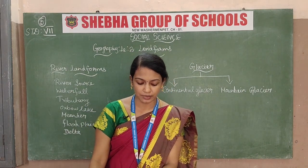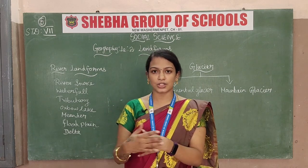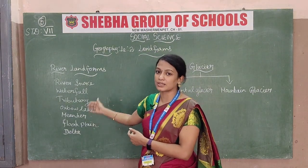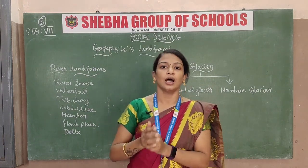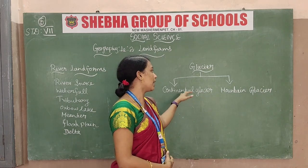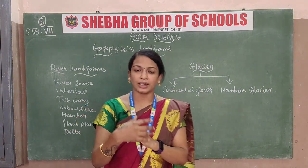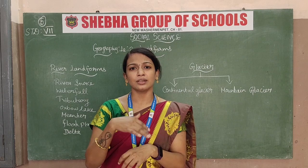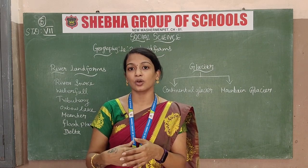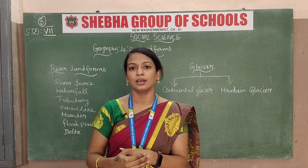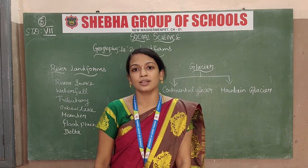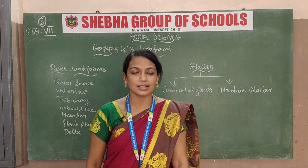So we saw in this lesson: first the introduction, next river landforms — where I showed you one picture — then glaciers with two types: continental and mountain glacier. Then we saw wind landforms: mushroom rocks, inselbergs, and also the coastal region landforms. We finished with lagoons. I hope you all understand this lesson, students. I will see you in the next class. Thank you.